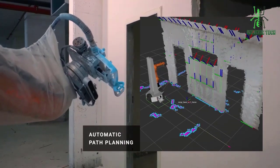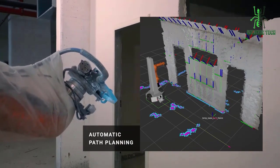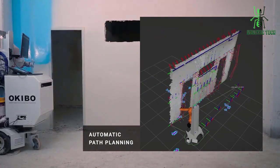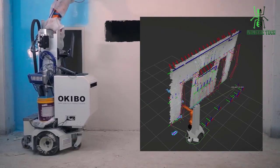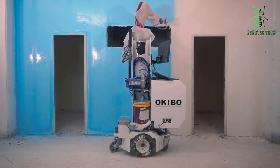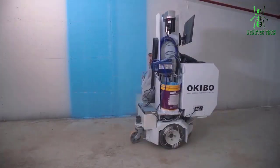With the Okibo Autonomous Painting Robot, artists can work faster and more efficiently than ever before. And because the robot is capable of creating works with incredible detail and precision, artists are free to explore new styles and techniques that were previously out of reach.